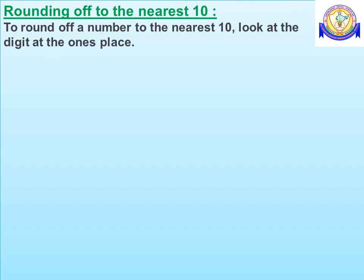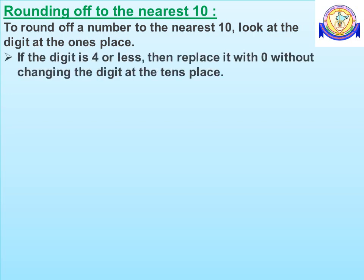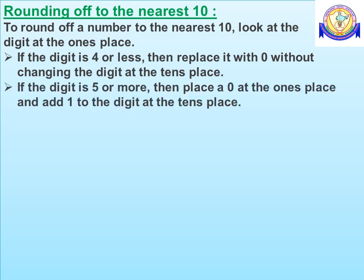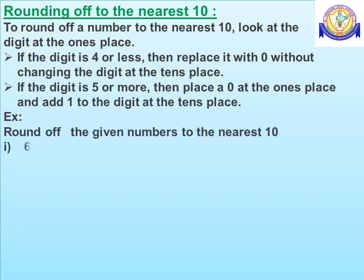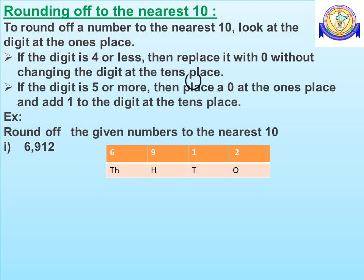To round off a number to the nearest 10, look at the digit at the 1's place. If the digit at the 1's place is 4 or less, then replace it with 0 without changing the digit at the 10's place. If the digit at the 1's place is 5 or more, then place 0 at the 1's place and add 1 to the digit at the 10's place. Consider the number 6,912, which is to be rounded off to the nearest 10. In 6,912, 2 is in the 1's place and 1 is in the 10's place. The digit at the 1's place, 2, is less than 4.